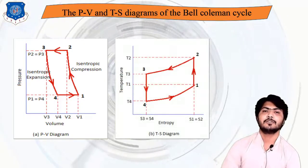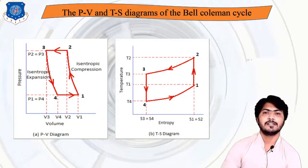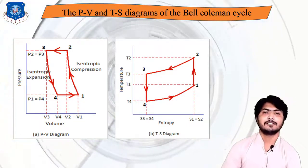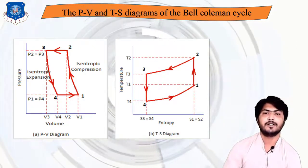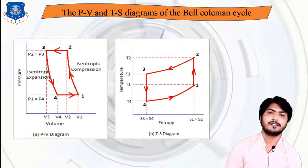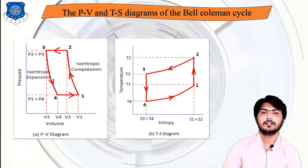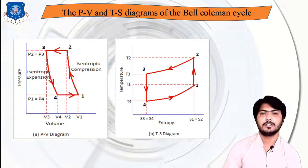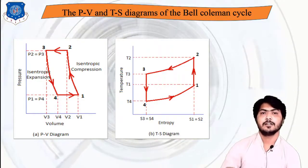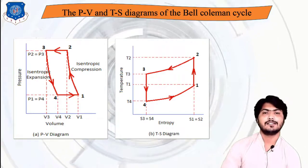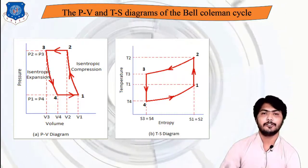In the TS (temperature-entropy) diagram of the Bell-Coleman cycle: process 1 to 2 is isentropic compression — a straight vertical line upward as temperature increases. Process 2 to 3 is constant pressure heat rejection — a curved line where temperature decreases as heat is rejected. Process 3 to 4 is isentropic expansion where temperature decreases with entropy constant.